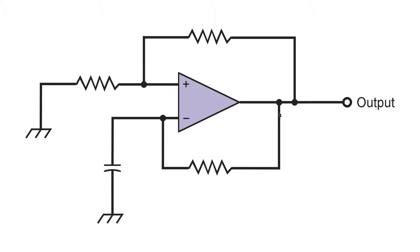You can limit the gain of an operational amplifier by providing some negative feedback, and we've done that here in this circuit, even though it's an oscillator — although it is grounded through a capacitor. The output is also fed back to the non-inverting input, and that produces an in-phase feedback which will cause the operational amplifier to oscillate.